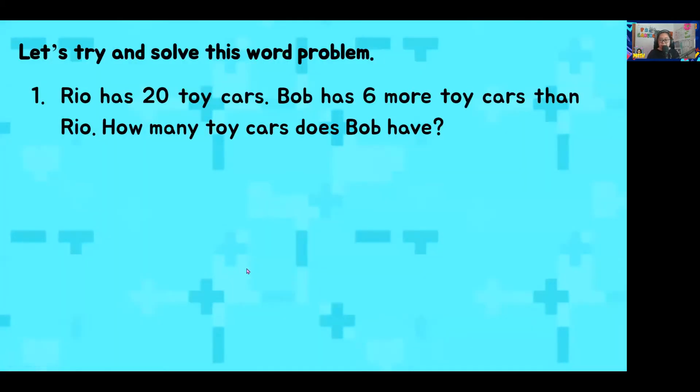Alrighty, let's try and solve this first word problem. Rio has 20 toy cars. Bob has six more toy cars than Rio. How many toy cars does Bob have? First, we need to ask, how many people are in the story? Very good, you are correct. There are two people in the story and who are they? They are Rio and Bob.